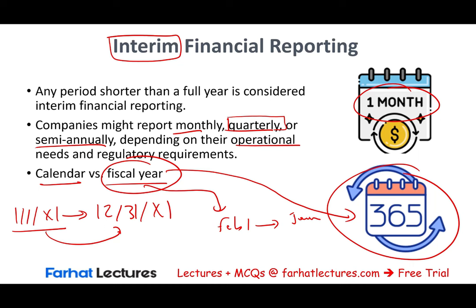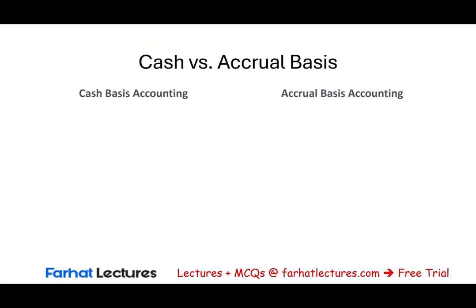Why would a company choose a fiscal year rather than a calendar year? A prime example is retailers. They are very busy during the holiday season — December and early January — and don't have time to focus on financial reporting or count inventory when they're selling it. So they might start their year February 1st, which is perfectly acceptable.